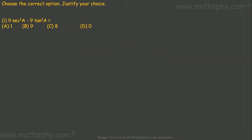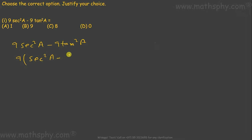This first one says 9sec²a minus 9tan²a. Let's take 9 as common, so this gives me 9(sec²a minus tan²a). I know that 1 plus tan²a is equal to sec²a.